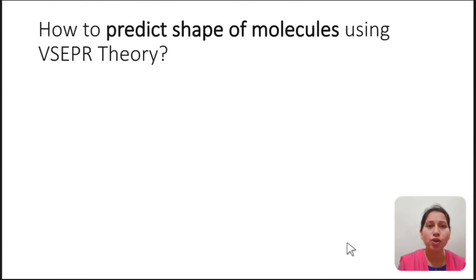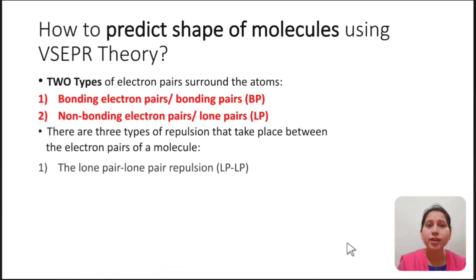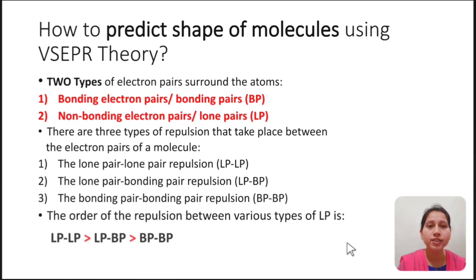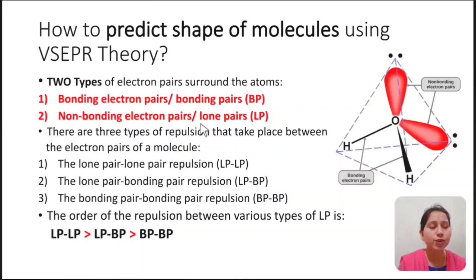Now, how to predict the shape of molecules using VSEPR theory? There are two types of electron pairs that surround the atoms. First, bonding electron pairs, also called bonding pairs, abbreviated as BP. Second, non-bonding electron pairs, abbreviated as LP, also called lone pairs. There are three types of repulsion: lone pair–lone pair repulsion, lone pair–bond pair repulsion, and bond pair–bond pair repulsion.